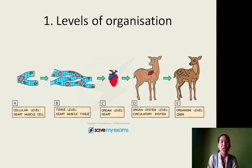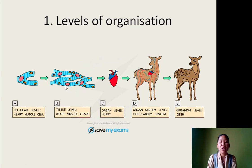Let us look at the first basis of classification, that is level of organization. Taking an example of a higher organism like a deer, the basic unit is the cell. This cell has its own structure and function, so this is at a cellular level. For example, the muscle of the heart works at the cellular level. When all the muscles of the heart work together to perform a common function, it becomes a tissue — we have heart muscle tissue at the tissue level. Different tissues, when they work together in coordination, become an organ, and we call it the organ level.